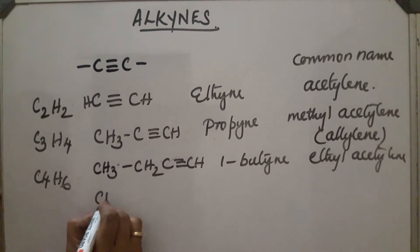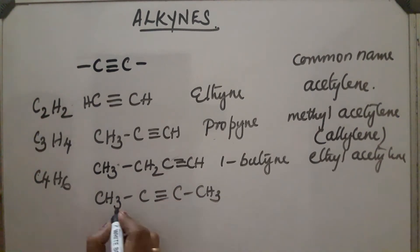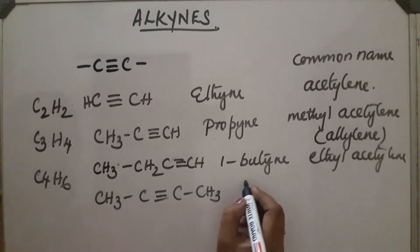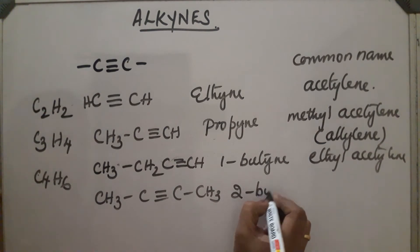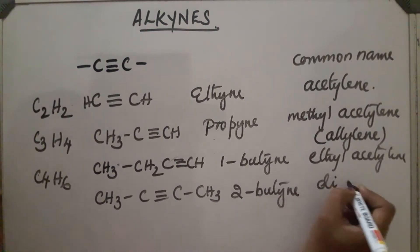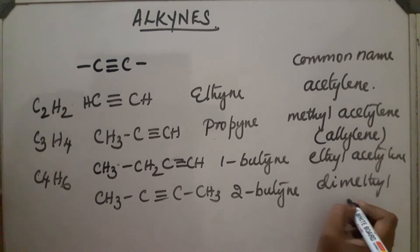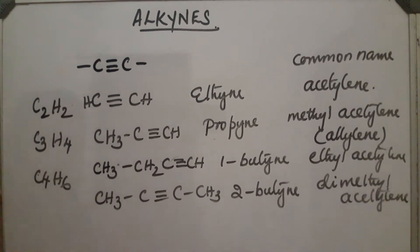The next isomer of C₄H₆ is CH₃–C≡C–CH₃, with the triple bond at the second position. So it is called 2-butyne, or dimethyl acetylene. We can see that two structural isomers are possible in the case of C₄H₆.